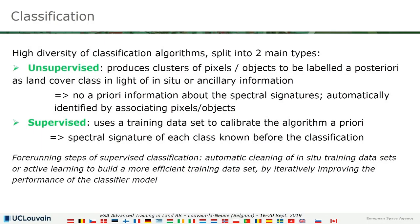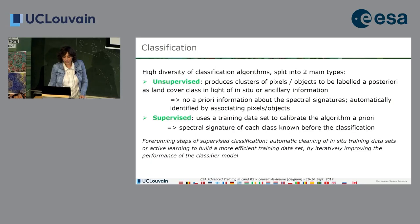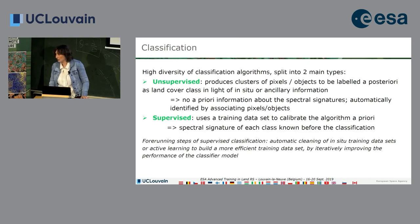Let's start with classification. There is a high diversity of classification algorithms split into two main types: the unsupervised one and the supervised one. Unsupervised means that you do not have any a priori information about the spectral signatures of your classes, and so the algorithm will group the pixels together in clusters based on similarities. You will have to label the clusters afterwards.